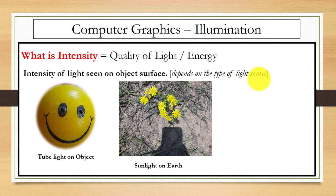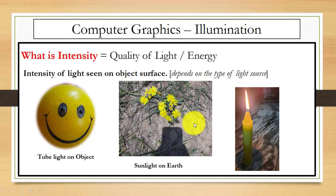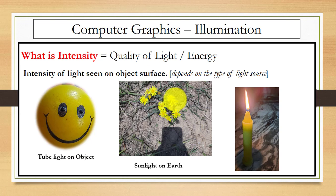For example, you can see the tube light on the object — the quality of light depends on the type of light source. In this picture you can see sunlight on the earth surface, and here you can see candle light. Among the three, the sunlight is the brightest compared to tube light and candle light. So the intensity of light you see on the object surface depends on the type of light source you are using.